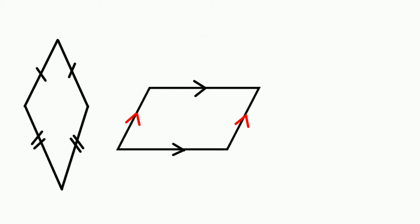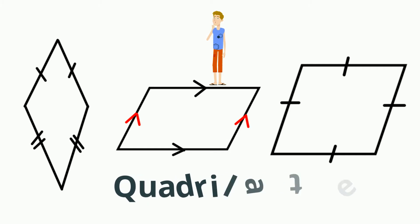What do these shapes have in common? Yes, they have four sides and four angles, and they are quadrilaterals.